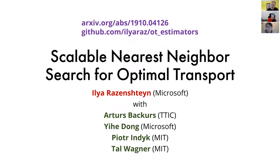Thanks, Mark, for the introduction. So, I'll talk about optimal transport and how to do nearest neighbor search with respect to optimal transport distances. This is based on a paper on Archive, joint work with Arthur's batch course from TTIC, Yi He Dong at Microsoft, Piotr Indyk, my former PhD advisor at MIT, and Tal Wagner, who is at MIT and incoming postdoc at our group.